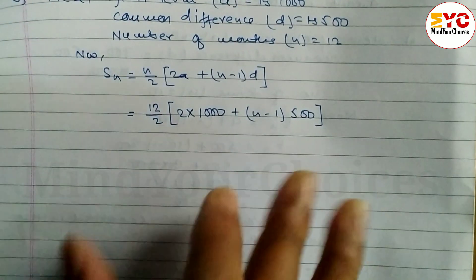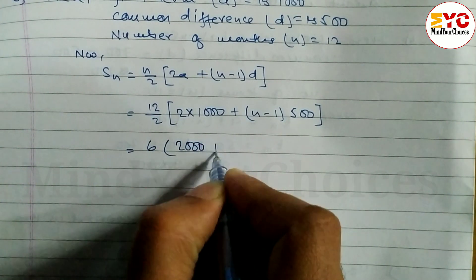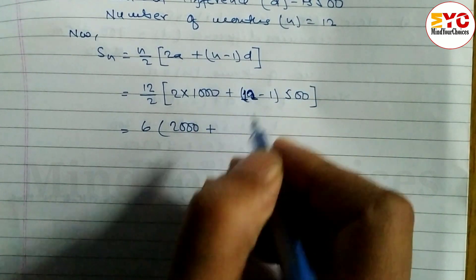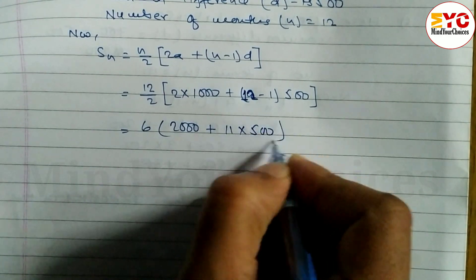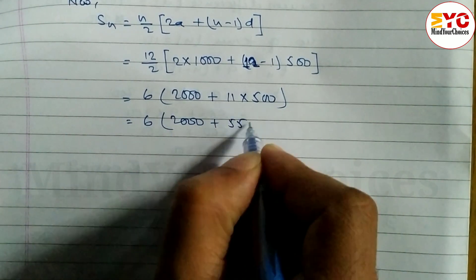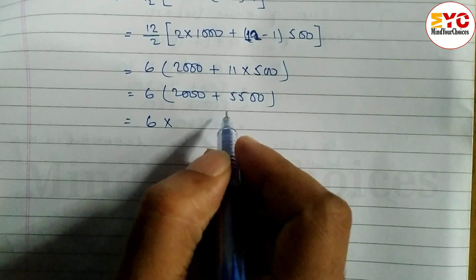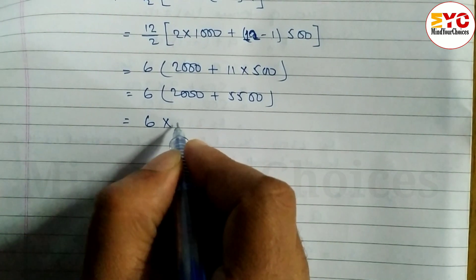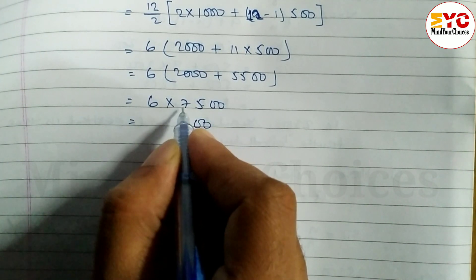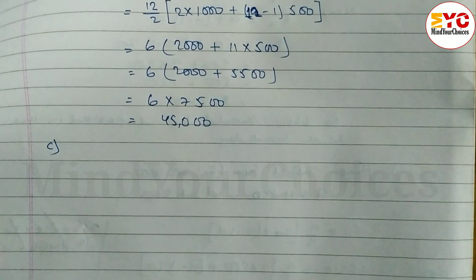Calculating: S12 equals 6 times (2000 plus 11 into 500) equals 6 times (2000 plus 5500) equals 6 times 7500 equals rupees 45,000. So in one year, total deposited amount is 45,000.